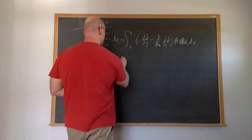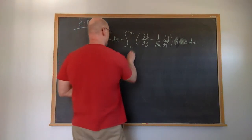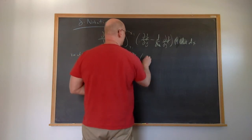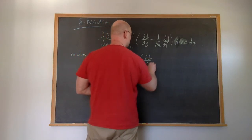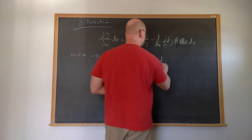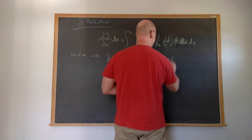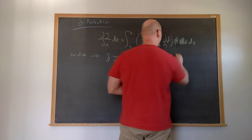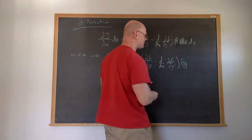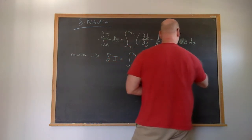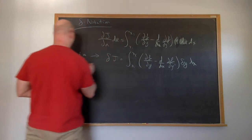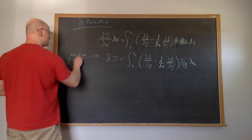This is going to be equal to the integral from x1 to x2 of the partial of f with respect to y, minus d/dx of the partial of f with respect to y prime, times the variation in the path y, dx. So this is the variation of the functional.